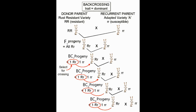Requirements of a Backcross Program: A suitable recurrent parent must be available which lacks one or two characteristics. A suitable donor parent must also be available. The donor parent should have the character or characters to be transferred in an intense form. The character to be transferred must have high heritability and preferably should be determined by one or few genes. A sufficient number of backcrosses should be made so that the genotype of the recurrent parent is recovered in full.